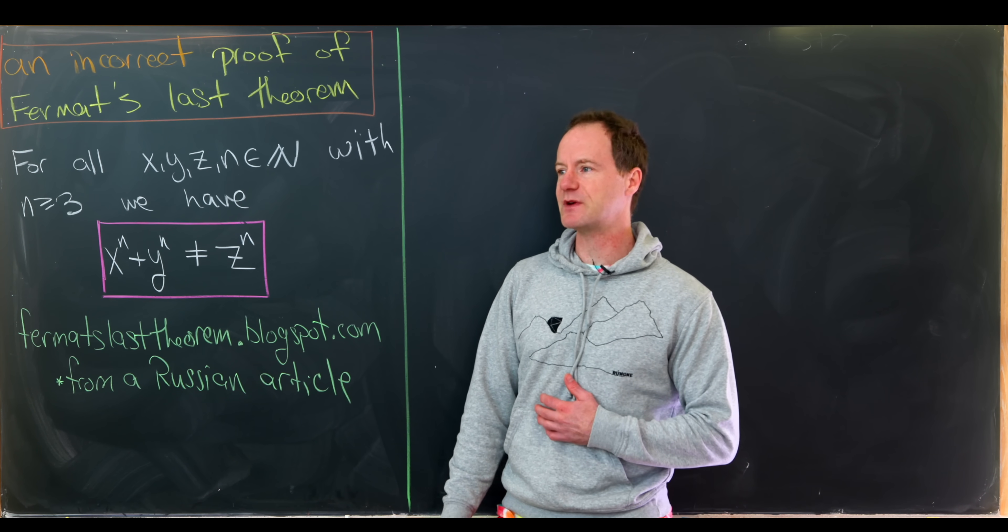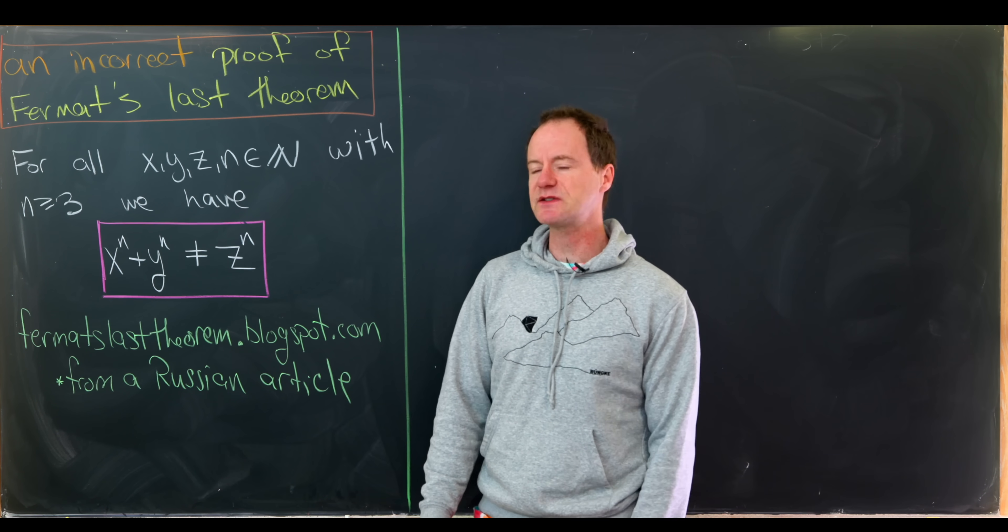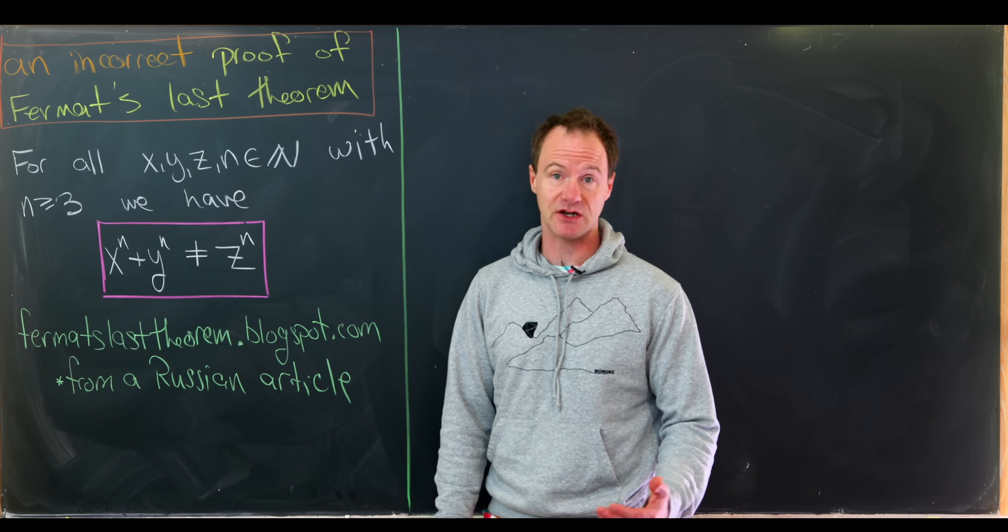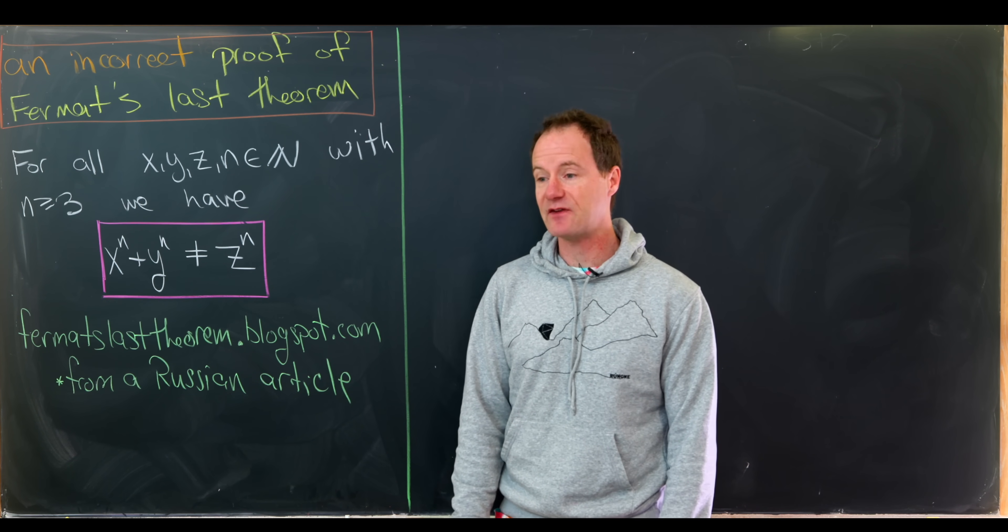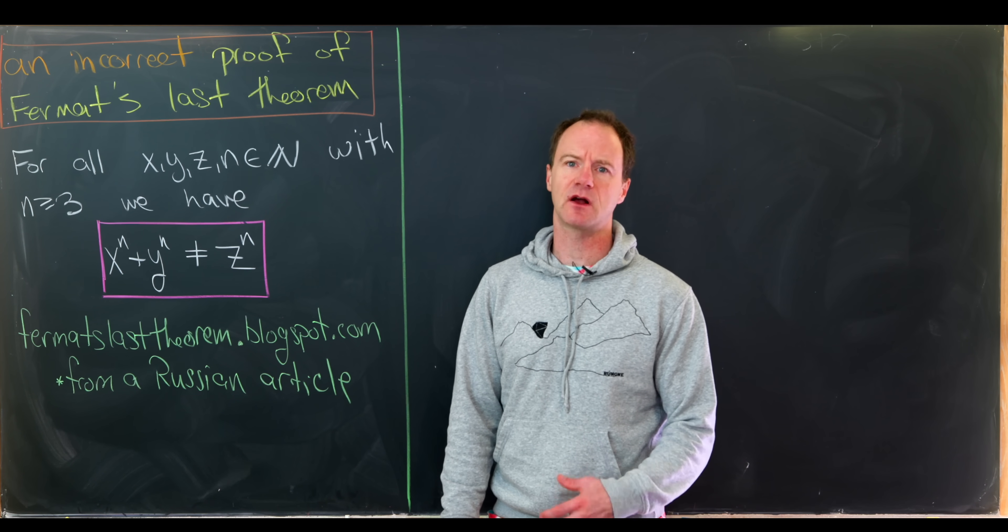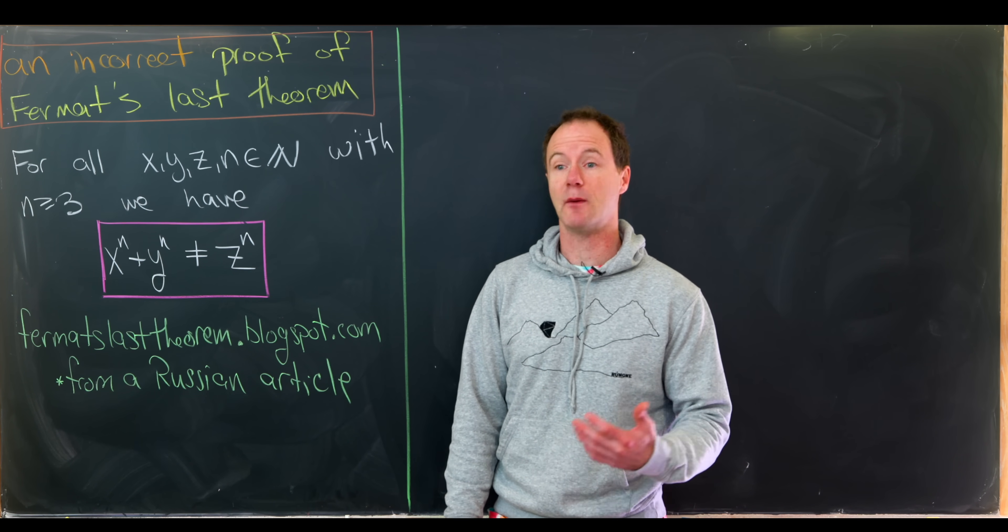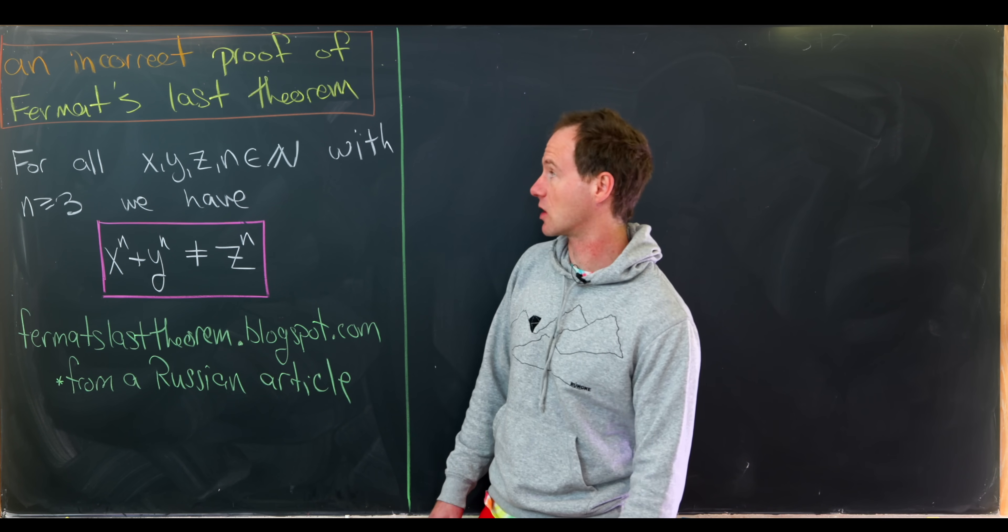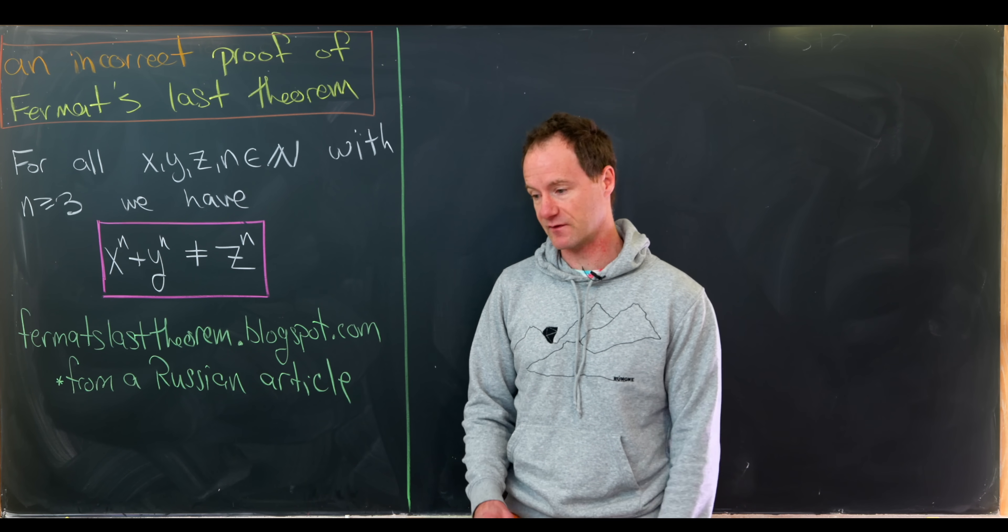Maybe before we jump into the proof, let's point out that the actual proof done by Andrew Wiles took hundreds of pages, and in fact what he did was proved something called the Tanayama-Shamura conjecture, which was related to modular forms and elliptic curves, and Fermat's last theorem just happened to be a nice corollary of that.